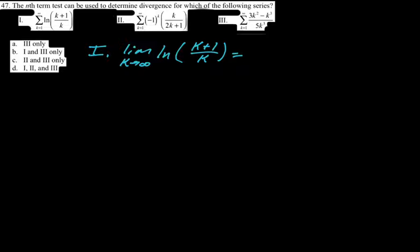New problem: the nth term test can be used to determine divergence for which of the following series? For option one, the limit as n→∞ gives the natural log of 1, which is zero. That means the nth term test doesn't tell us anything, so it does not tell us that the series diverges — that's a no.